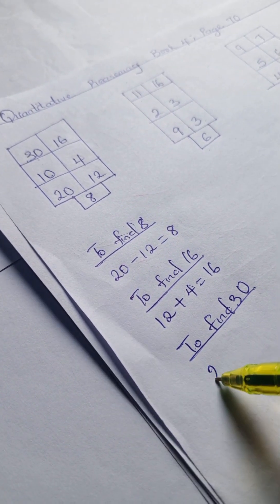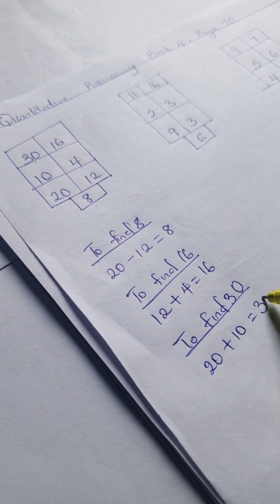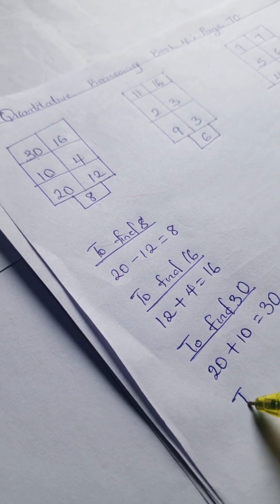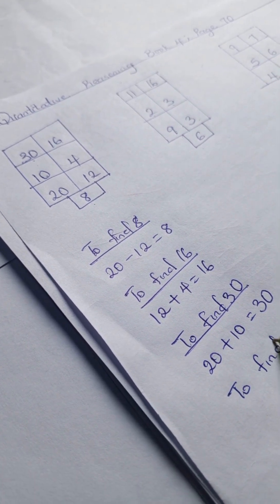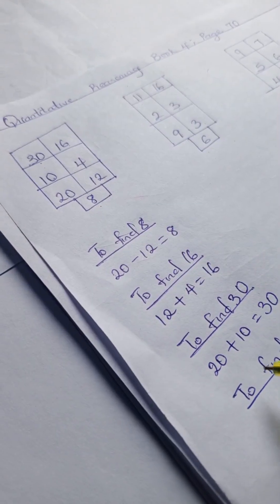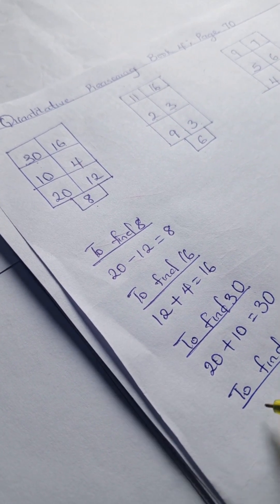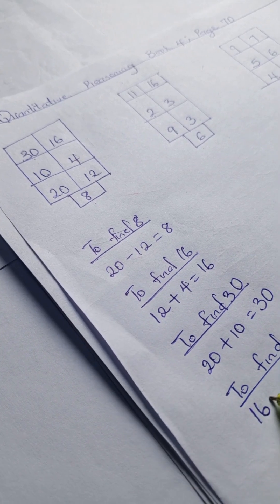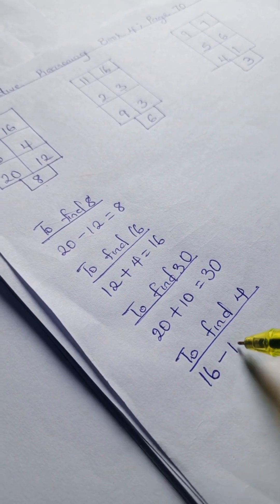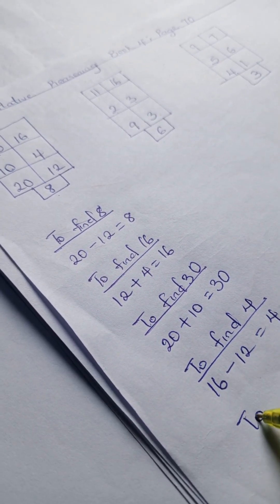To find 30, we have 20 plus 10, which gives us 30. And to find 4, we have 16 minus 12, which gives us 4.